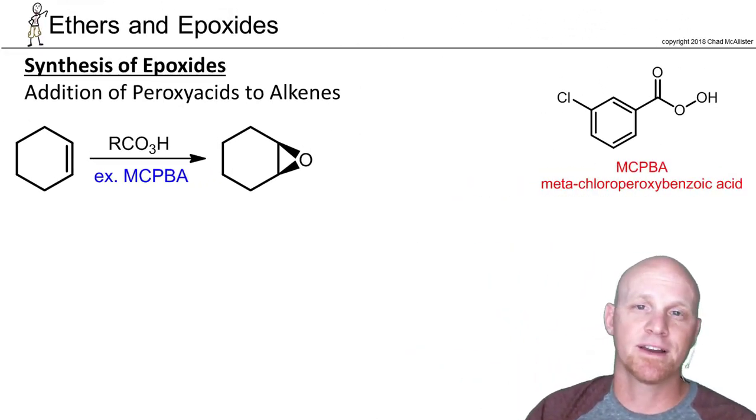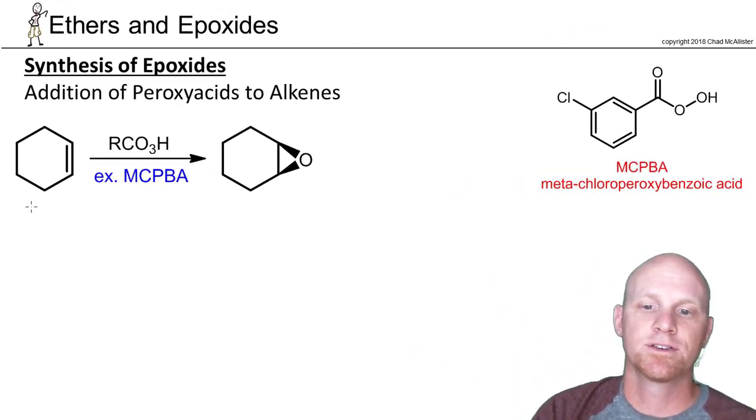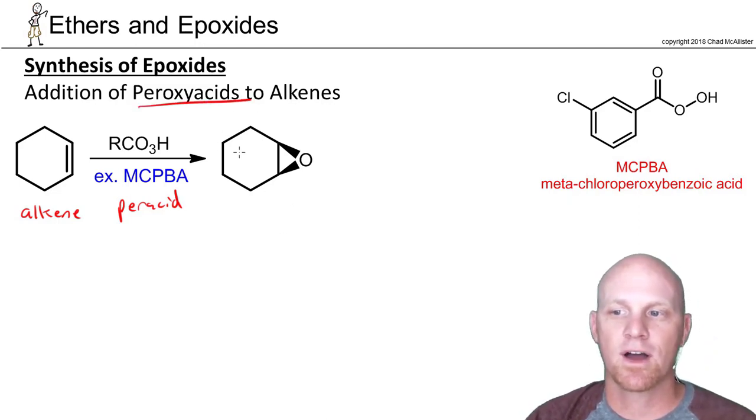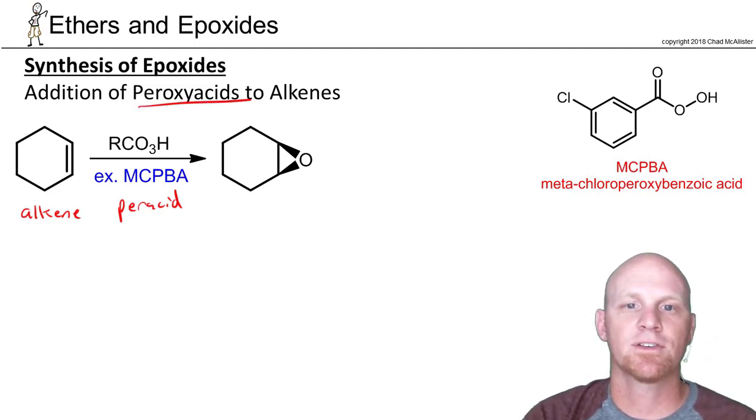Now the second way of making an epoxide here is one you've already learned. And starting with an alkene you want to add a peracid or sometimes a peroxy acid is what we call them. And that'll form the epoxide. It's a review, it's a reaction you've already seen.